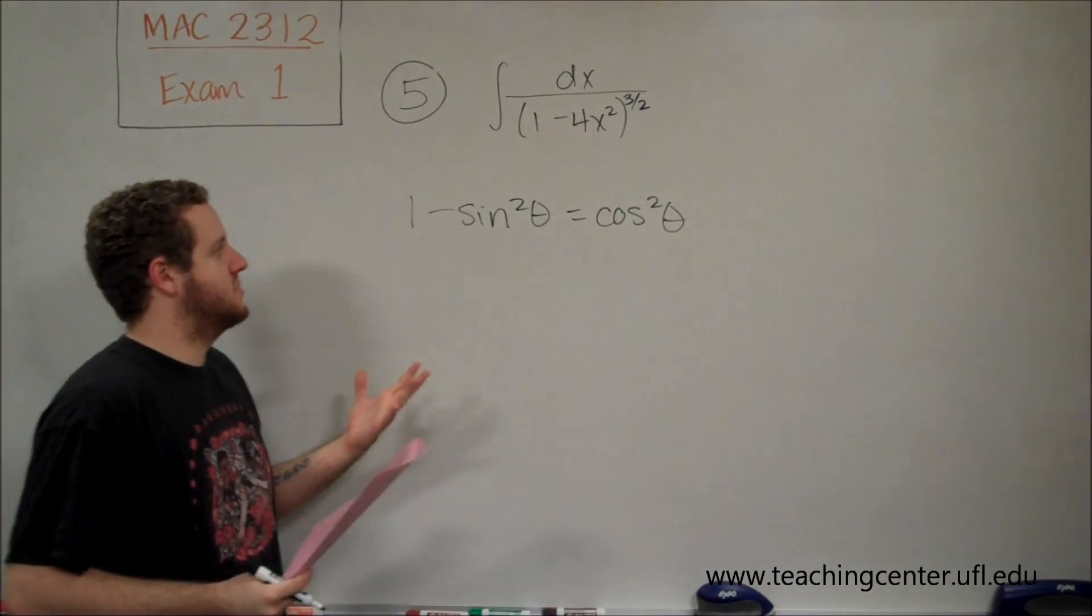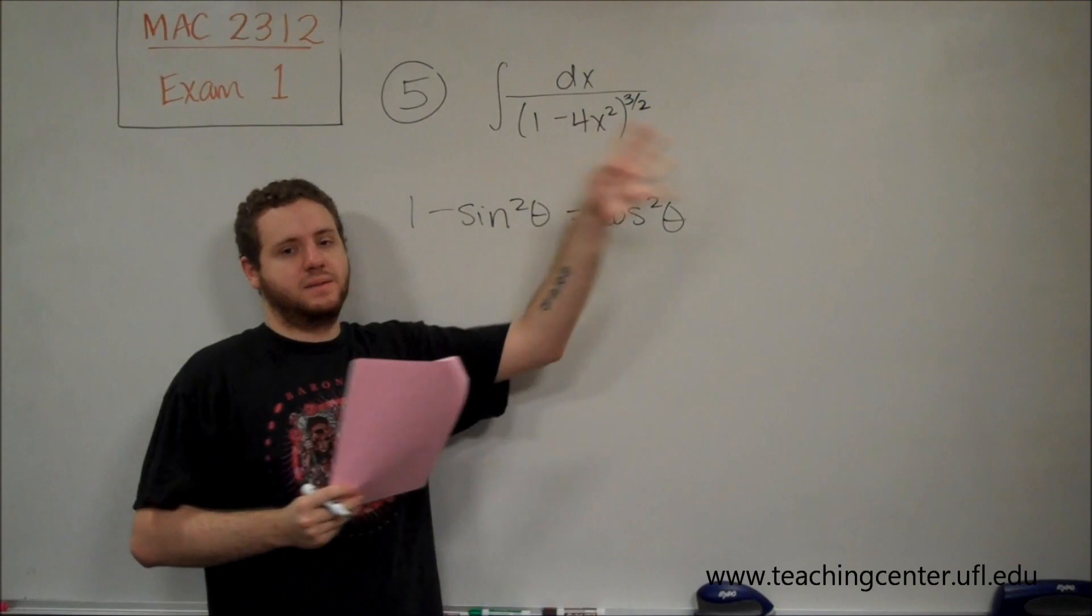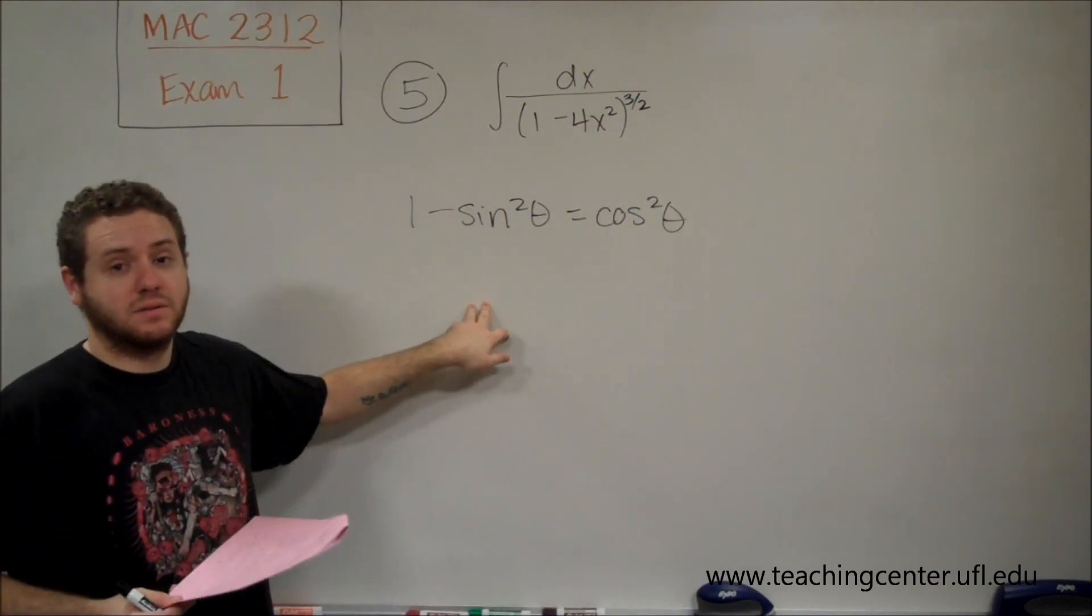1 minus sine squared equals cosine squared theta. So when we have a number minus our variable squared, we're going to be using sine as our trig substitution.